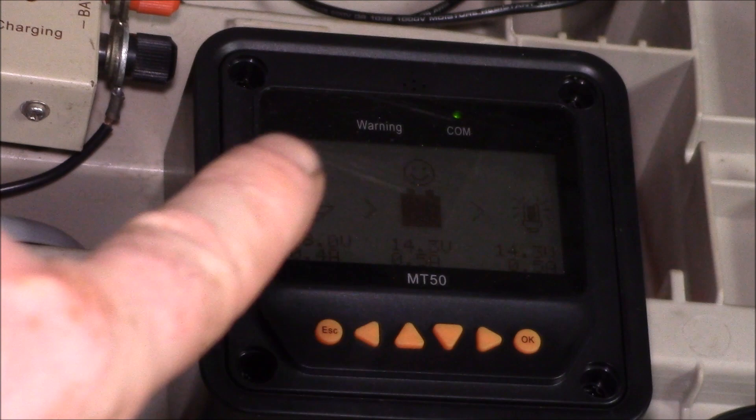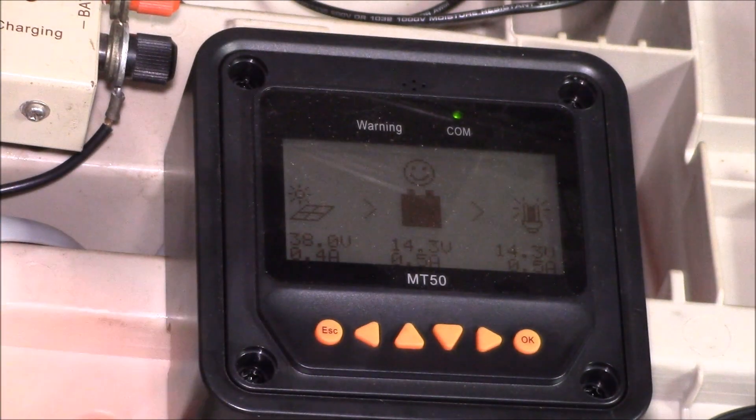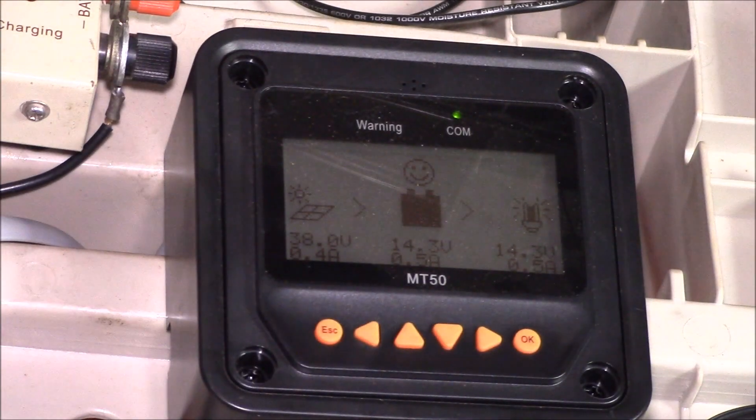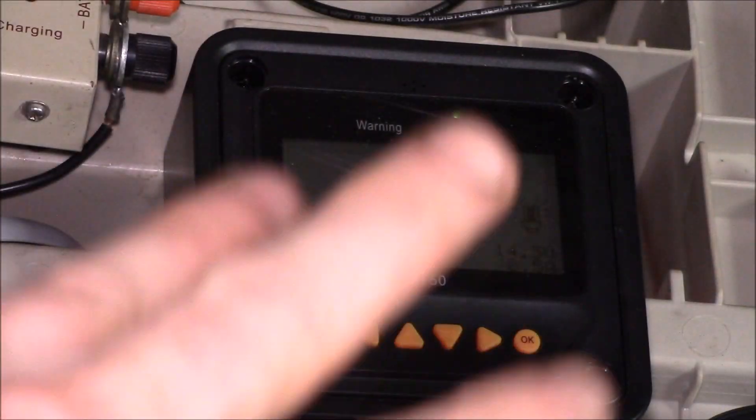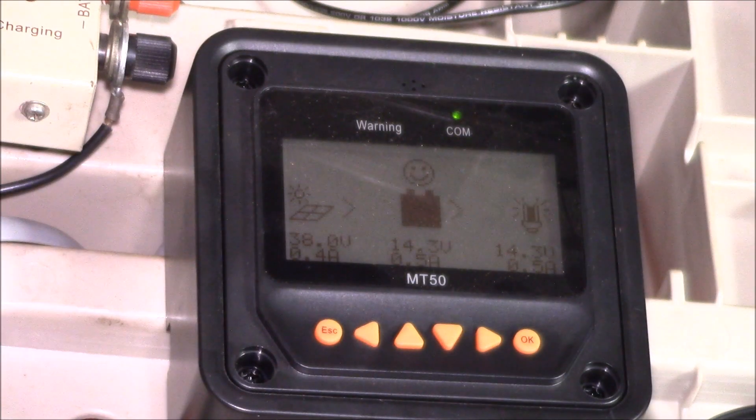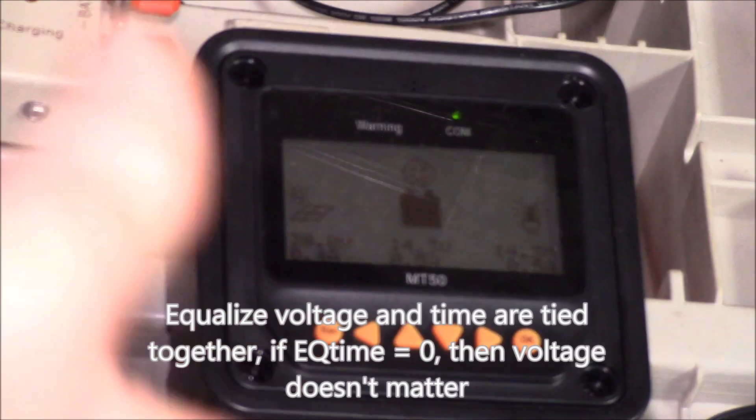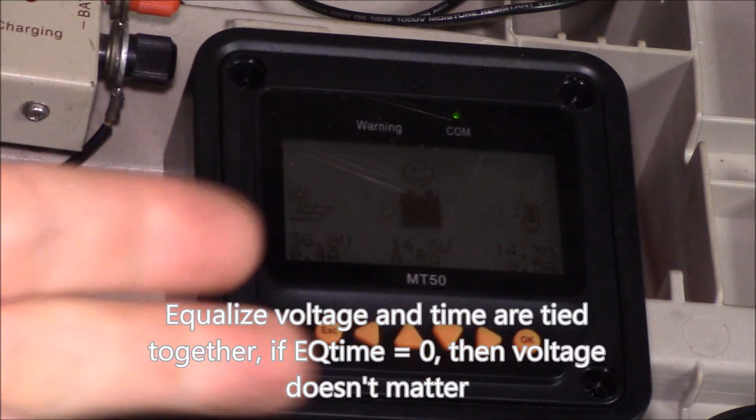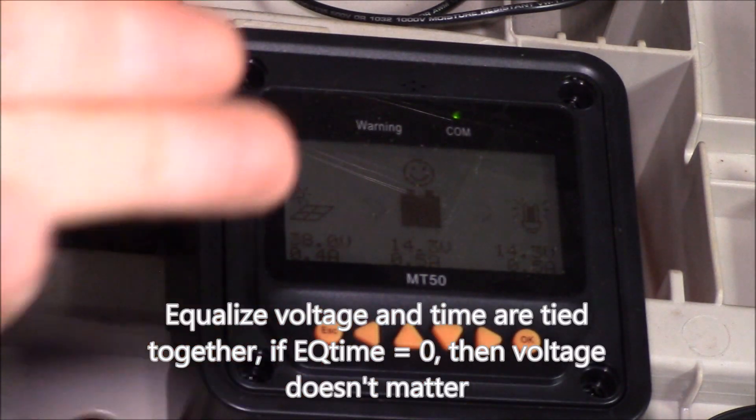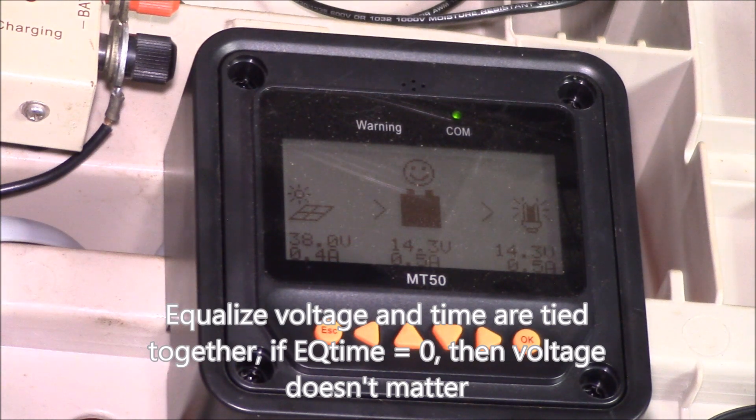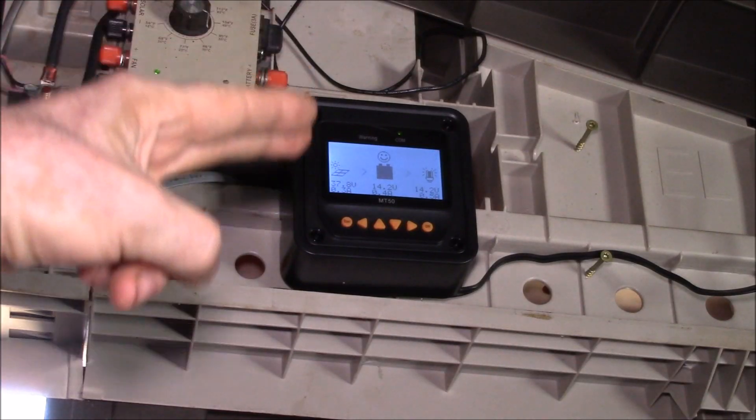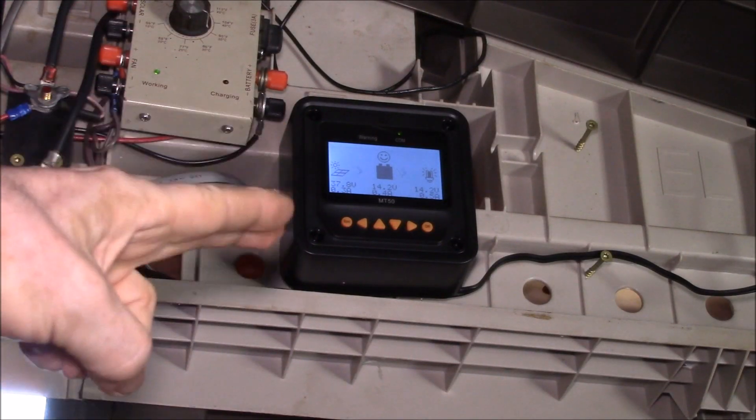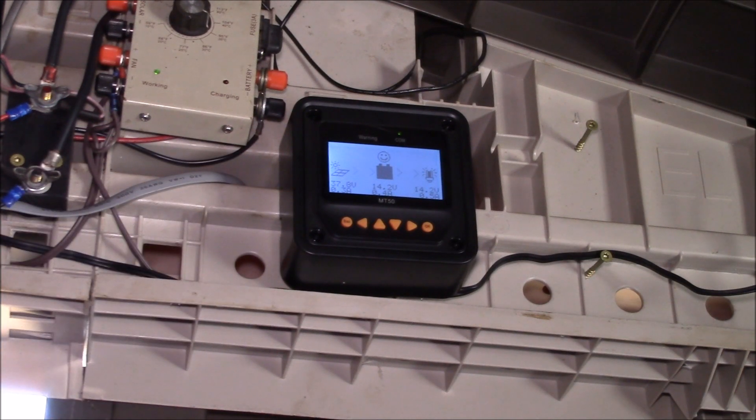It's a little bit more tedious but it is doable. Even if you just want to change one voltage, you've got to do all the voltages. Luckily there's really only maybe three or four things in there - you've got your boost voltage, your float voltage, your equalize voltage, boost time and equalize times. Hope that helps clear up the mystery of how you change the battery charging parameters on one of these MT50 remote displays.